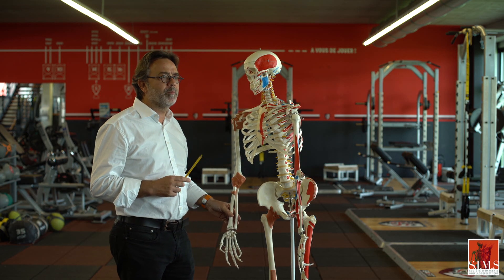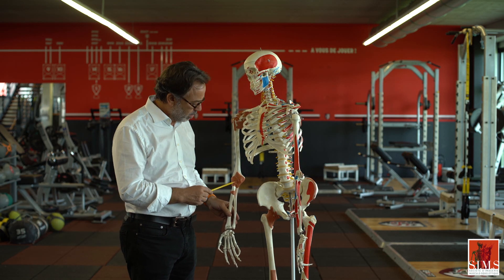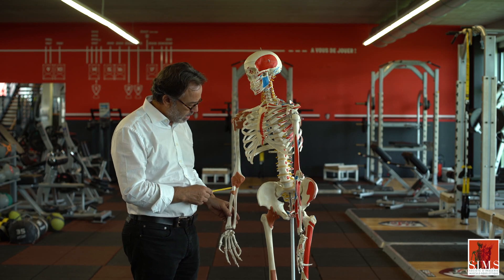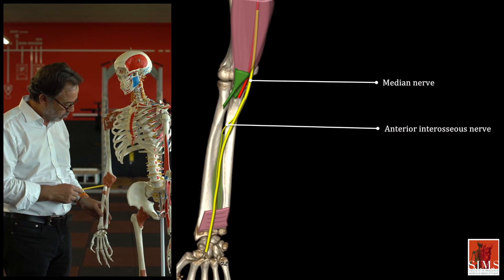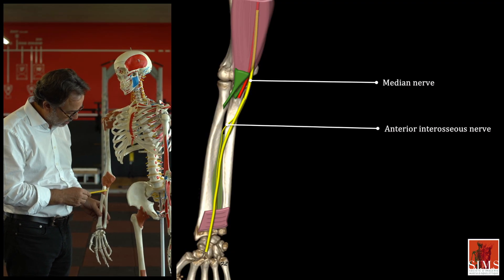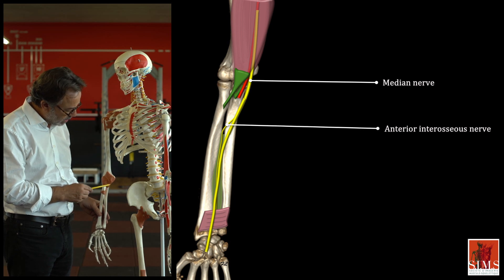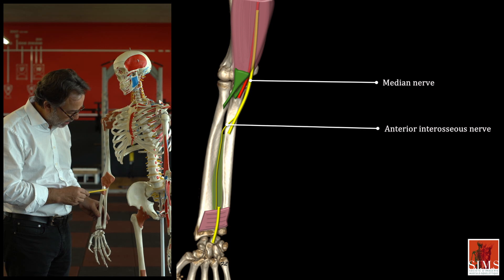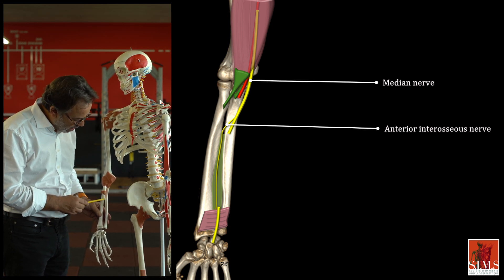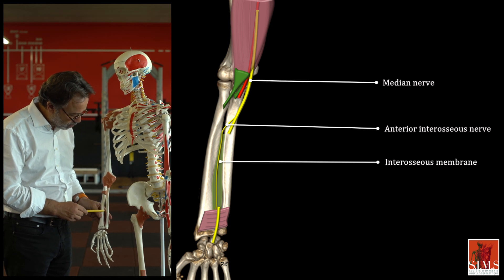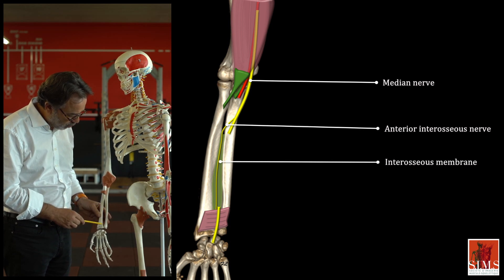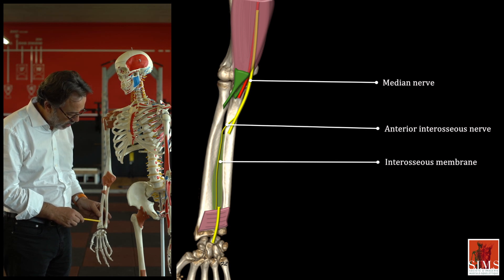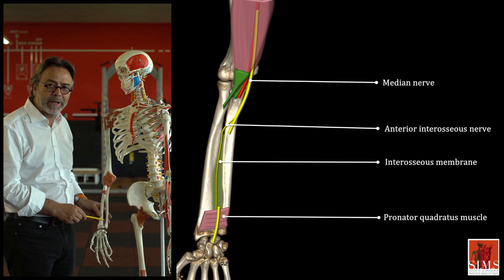Two main collateral branches of the median nerve are described. The first is the anterior interosseous nerve, which emerges approximately three centimetres distal to the humeroradial joint. It follows along the surface of the interosseous membrane to join the pronator quadratus muscle at the distal base of the forearm.